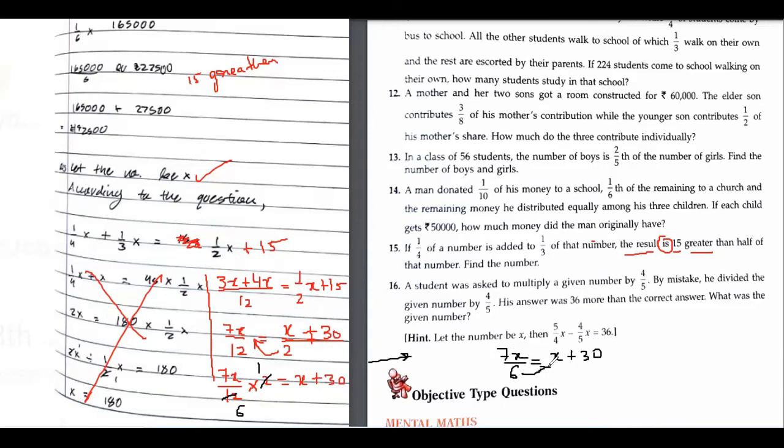Now I will shift this to the other side. It will become 7x equals to 6x plus 180. Because it will multiply with both the numbers. 6x will be shifted to the other side. 7x minus 6x will be x equals to 180. Is this thing clear? Yes.